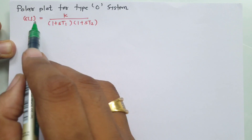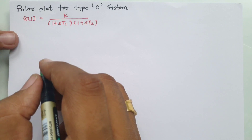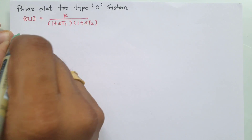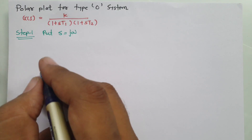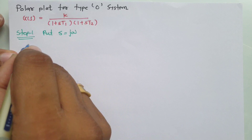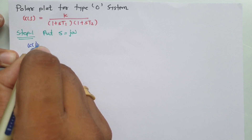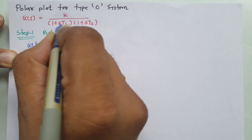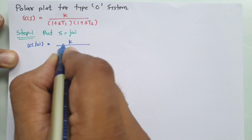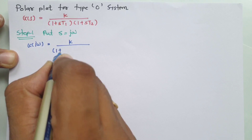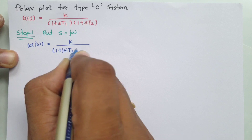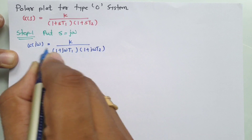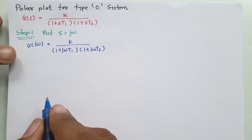Let us find the polar plot of this system step by step. The first step is to put s equals jω. So if you put s equals jω, you will have G(jω) equals k divided by (1 + jωT1)(1 + jωT2). That is how G(jω) is obtained.